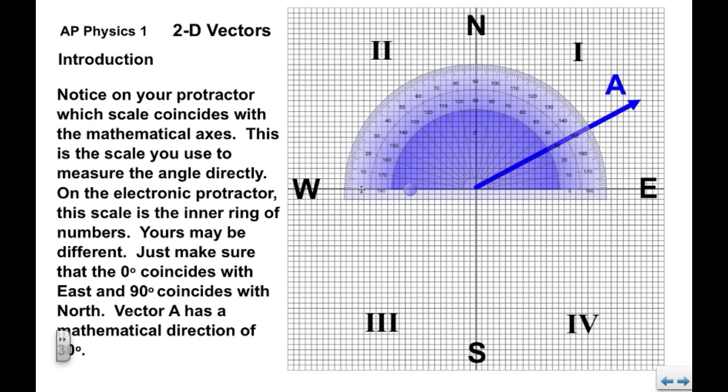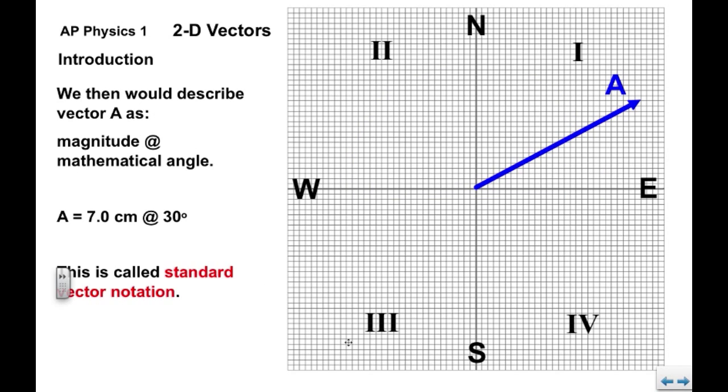Now this particular vector has a mathematical angle that lines up with 30 degrees in the mathematical set of axes. We would then describe this vector, magnitude at mathematical angle. We know the magnitude is seven centimeters, and the mathematical angle is 30 degrees. When we list the magnitude at the mathematical angle, this is what's called standard vector notation.